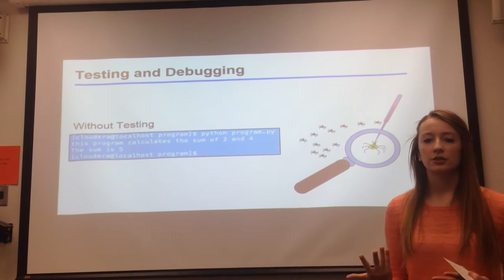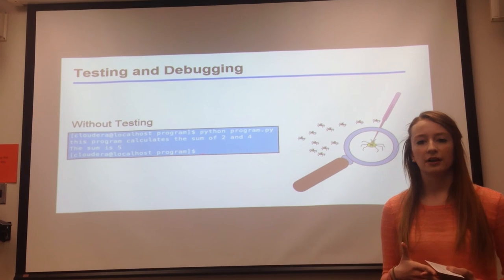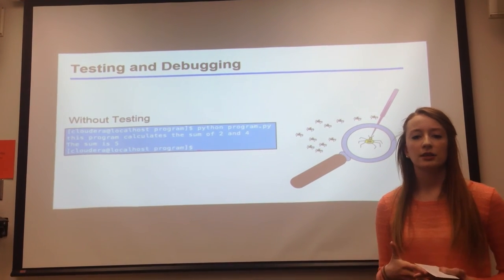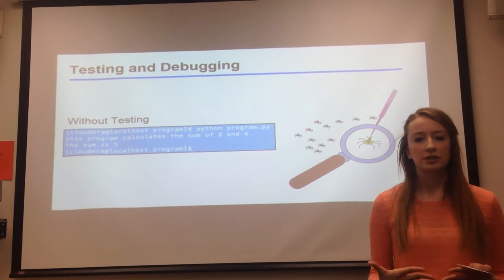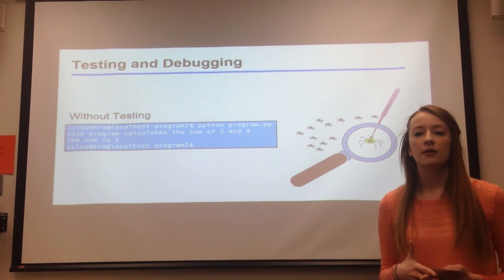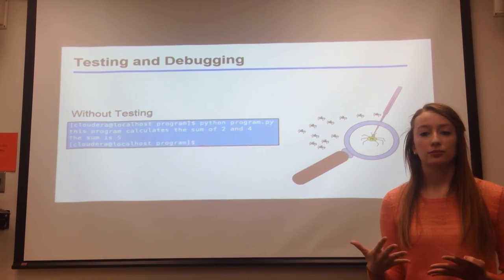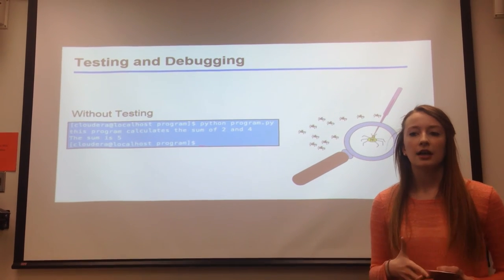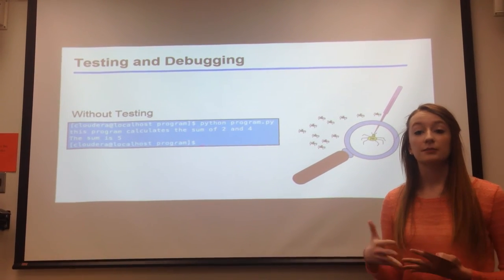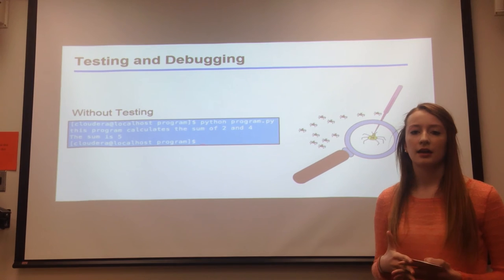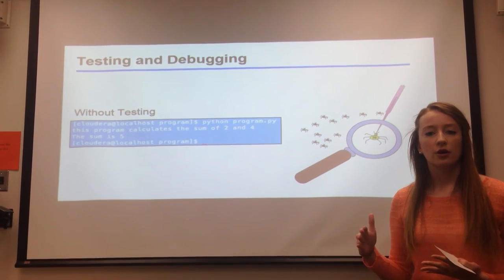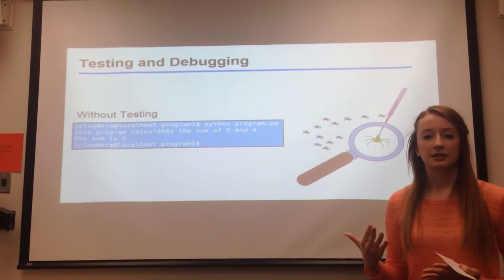While you're implementing your code, it's also very important to test and debug along the way. Testing is when the software engineer creates different things called test cases, which confirm that their program is acting the way that it should. If their code isn't acting the way it should, that's where debugging comes in — the software engineer will go through their code, find where the error is, and then fix it.